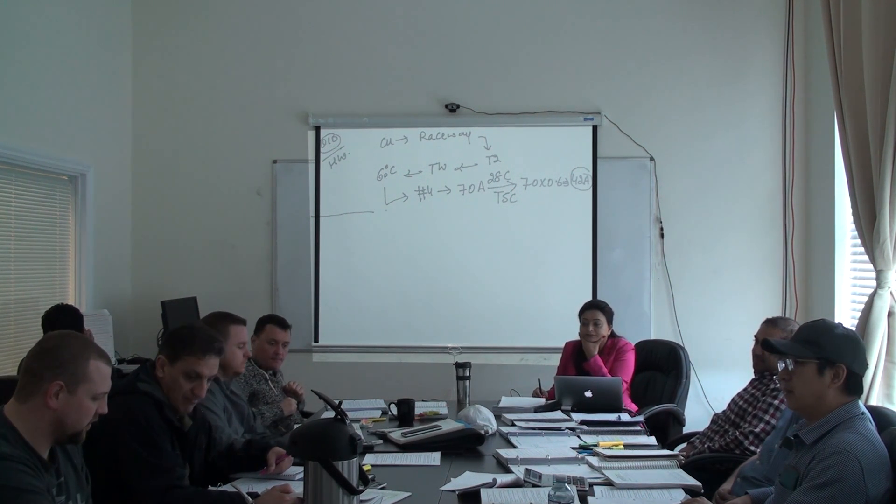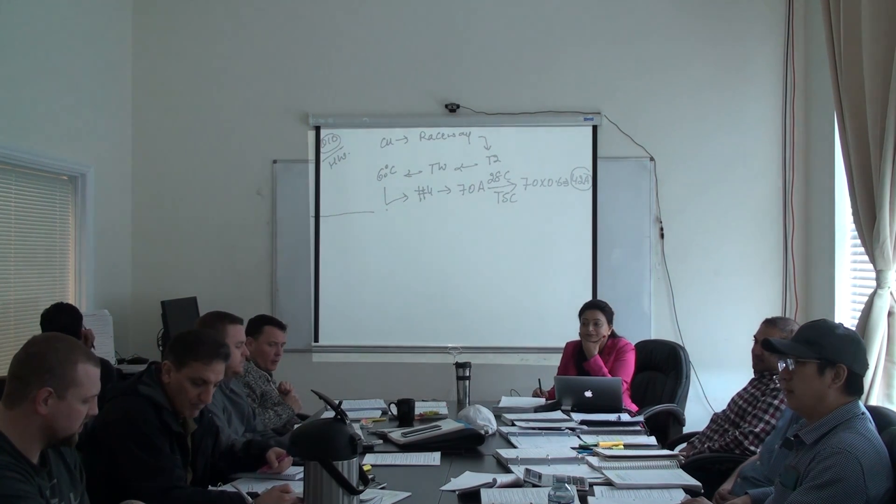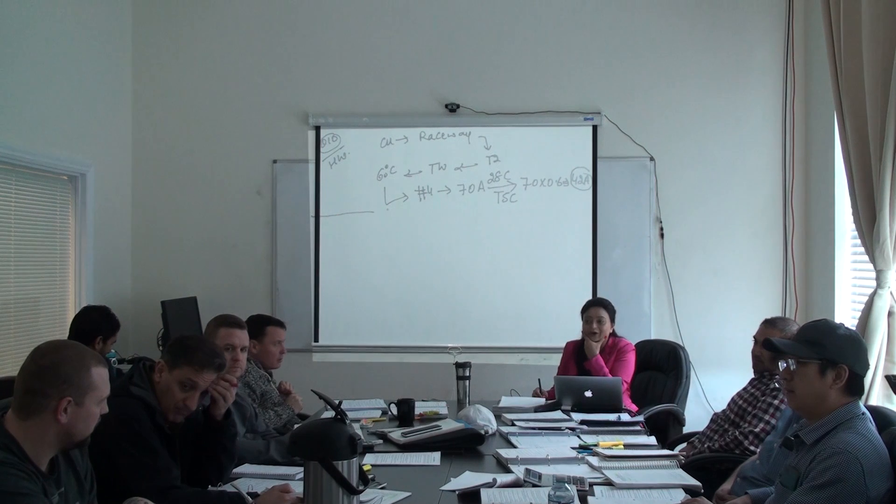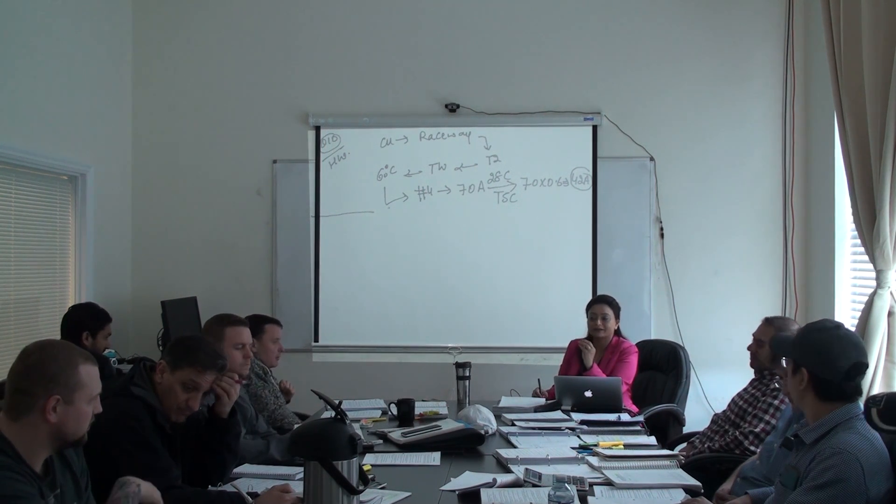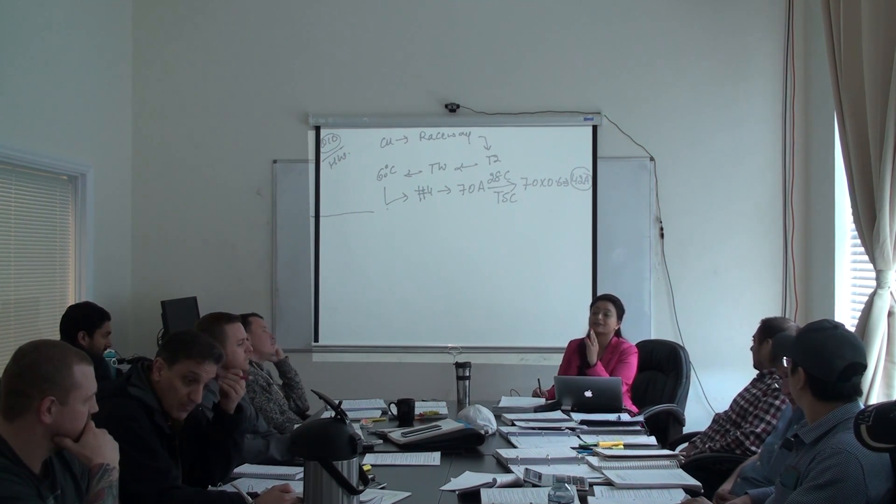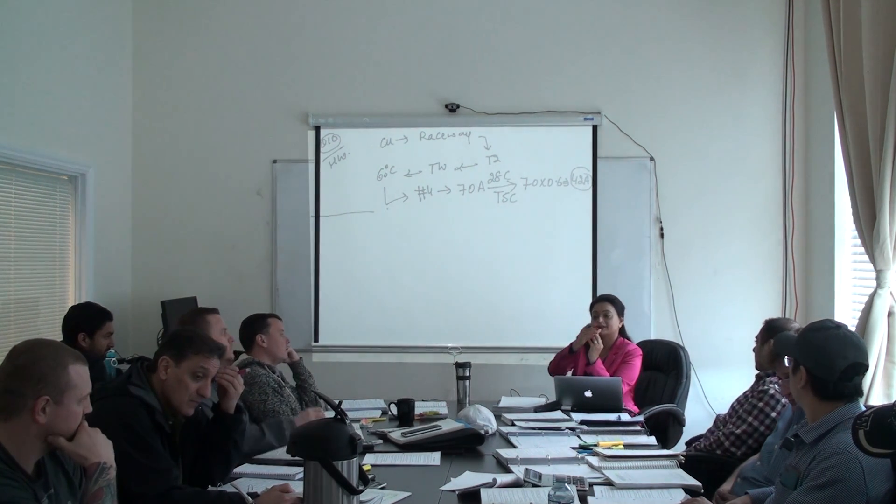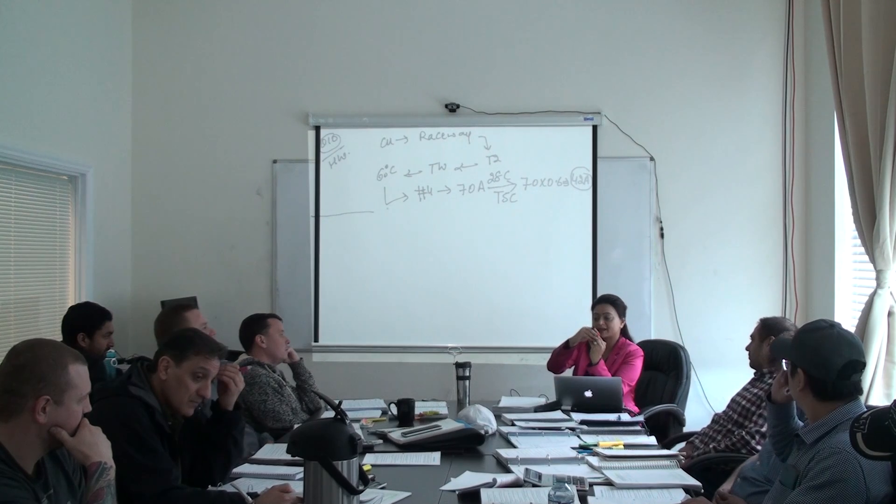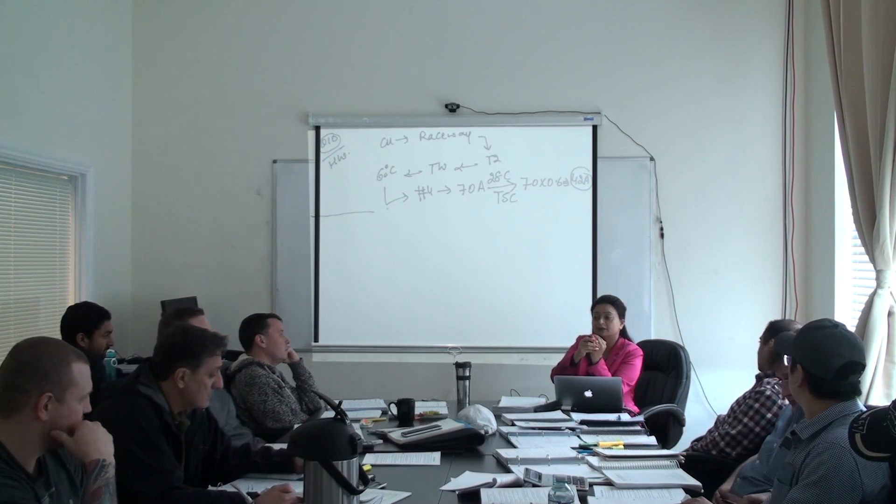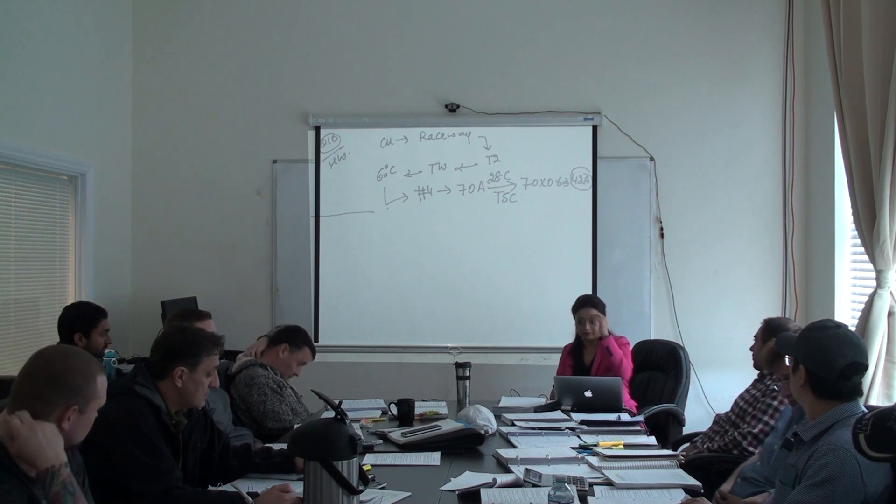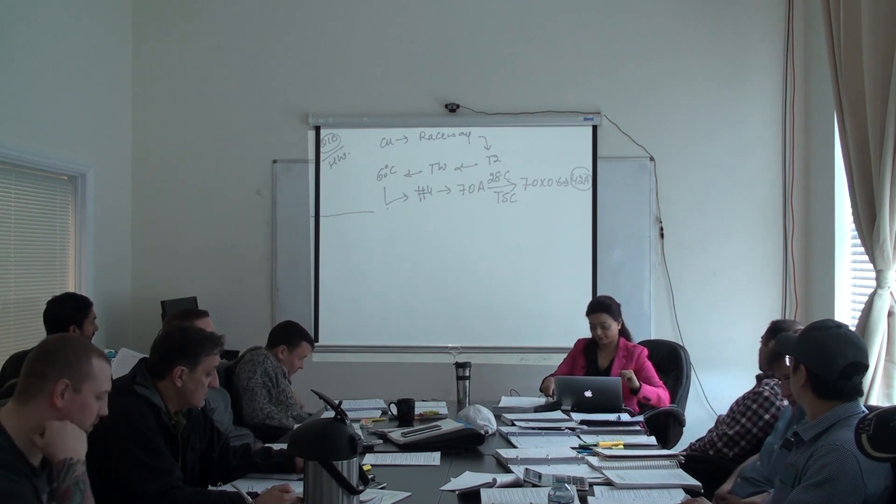In previous code books, was there language of current carrying conductors? We're going to talk about that. When there is a three phase four wire system, you have three phases plus a neutral and it's a balanced system, so each wire is carrying 100 amps. What's the current in the neutral? Zero. In that case you don't count it. We're going to talk about this when we highlight more stuff in section four.